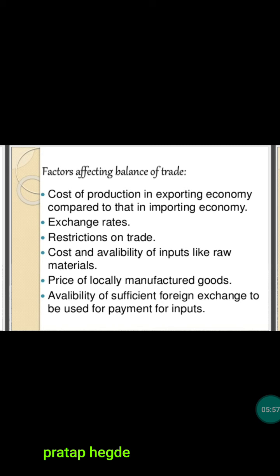Now we will study the factors affecting the balance of trade. The first factor is the cost of production in the exporting economy compared to that in the importing economy. As studied previously, a country tries to export more of a commodity in which it has a favourable cost of production and a production advantage. The cost of production plays a major role in deciding if a country is an exporting or importing country.